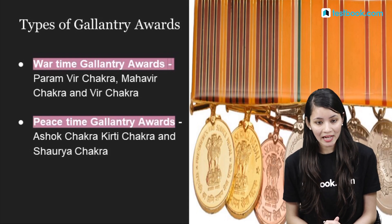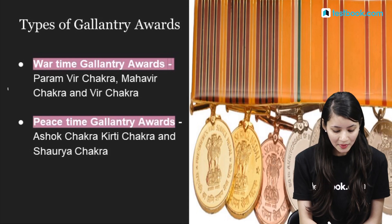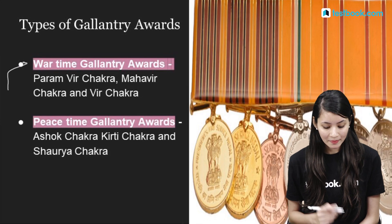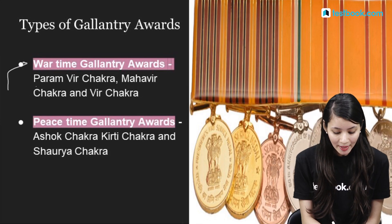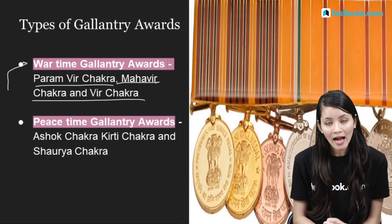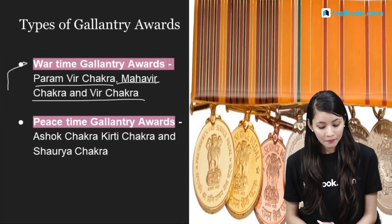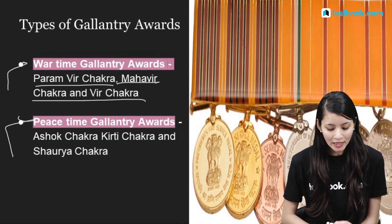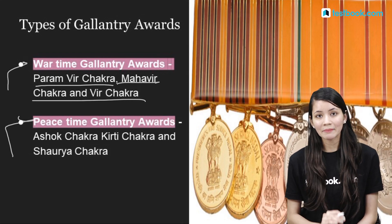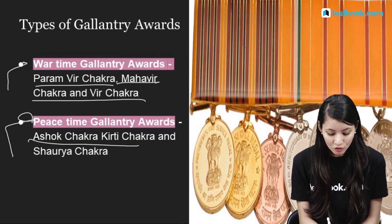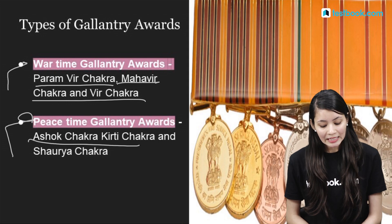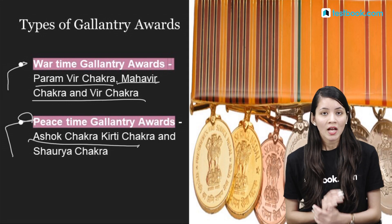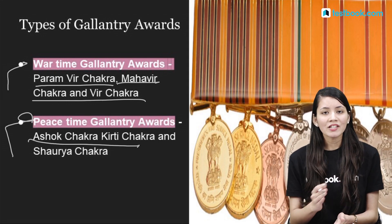There are two types of Gallantry Awards. The first type is Wartime Gallantry Awards, which includes Param Vir Chakra, Mahavir Chakra, and Veer Chakra. The second type is Peacetime Gallantry Awards, which includes Ashok Chakra, Kirti Chakra, and Shaurya Chakra. Now let's talk about each one.